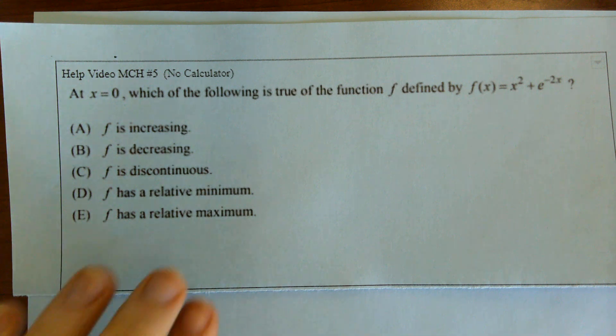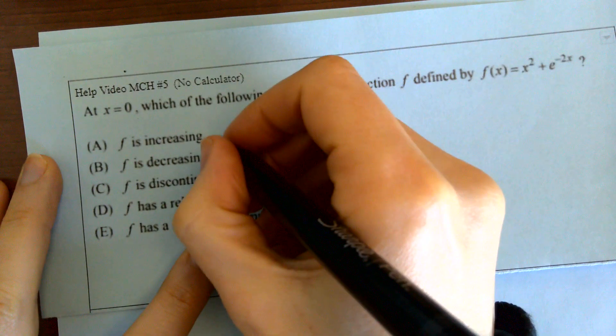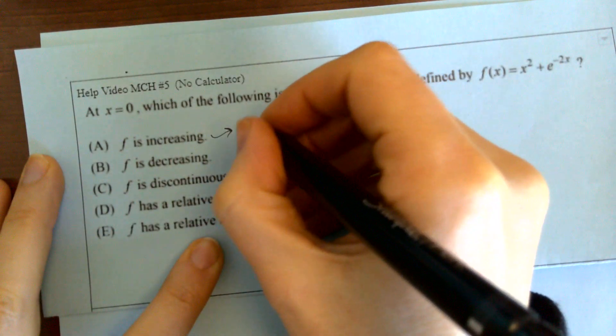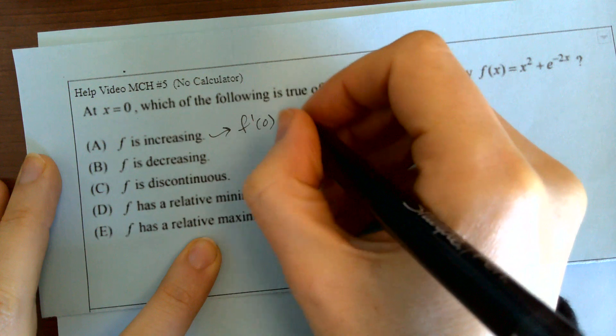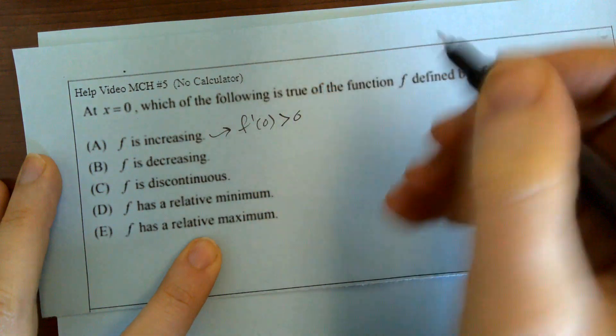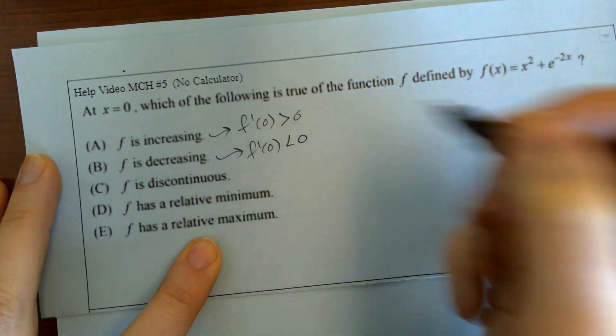Right away, your brain should go to Susan's table. So for this to happen, we would need f prime of zero to be positive. For this to happen, we would need f prime of zero to be negative.